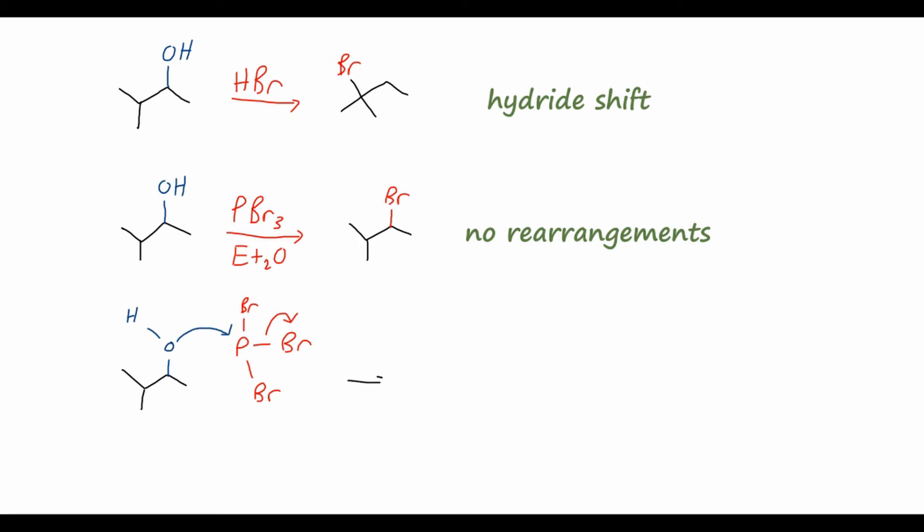And in sort of an SN2 process, we will kick off one of those bromines to give us this adduct here, where we have the oxygen with a positive formal charge, and then we have the phosphorus bonded to those two bromines here, and also to the oxygen. And now, since the oxygen has a positive formal charge, and it's bonded to that phosphorus, it's going to be a pretty good leaving group.